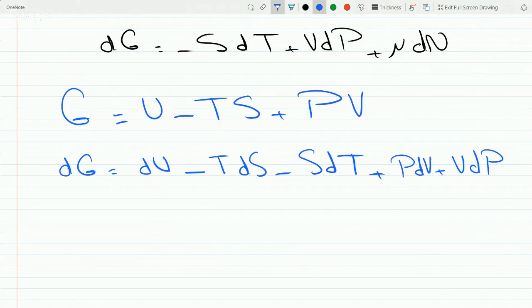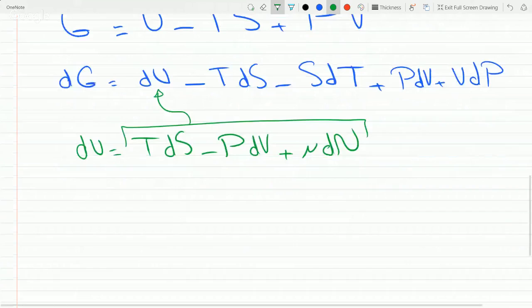dU is TdS minus PdV plus mu dN. Just plug this here and you'll get the dG, so just take this, plug it here, so you get dG